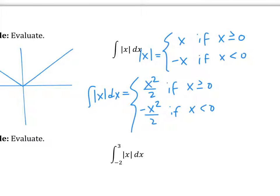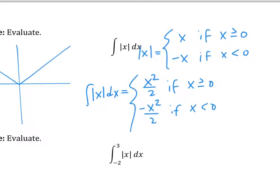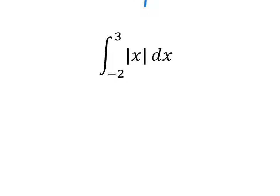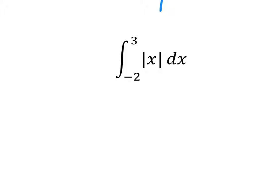Now let's apply this to actually solving a question. This is basically like asking: what is the distance from negative two to three if the velocity is equal to x? So what you do is put the absolute value on it, and then ask yourself: when does my particle switch direction? That's when x is equal to zero. So this function splits at x equals zero.